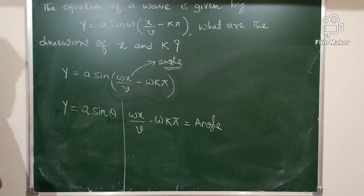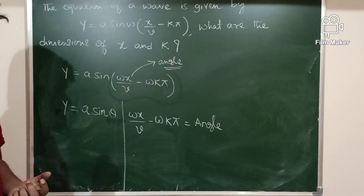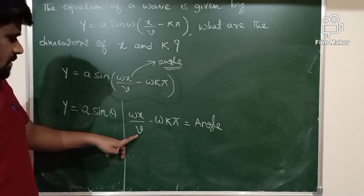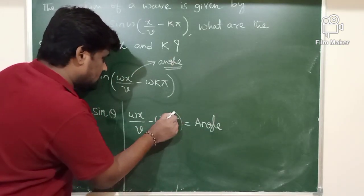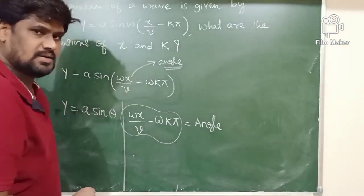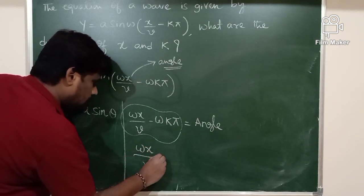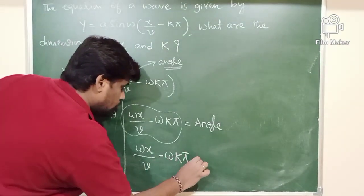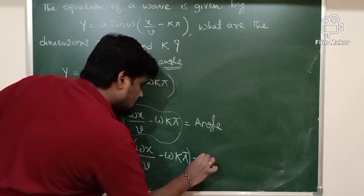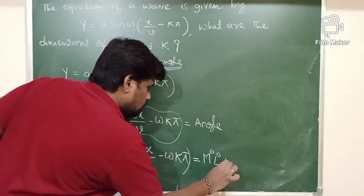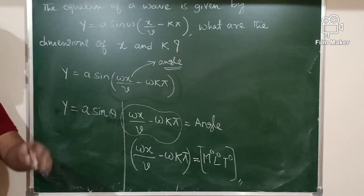As we discussed previously, the angle is a dimensionless physical quantity — it has a unit but no dimensions. So ωX/V minus ωK·π is an angle, and therefore this entire term is dimensionless, equal to M⁰L⁰T⁰.